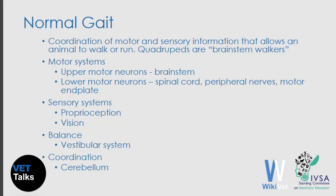Normal gait results from the coordination of motor and sensory information that allows an animal to walk or run. Quadrupeds are largely brainstem walkers, which means that the motor systems required for normal gait are largely confined to the brainstem. The lower motor neurons located in the spinal cord, peripheral nerves, and motor end plate are also necessary components for gait.